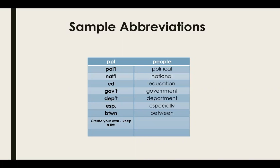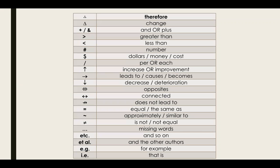3. Keep a separate list of your abbreviations and their meanings so that you can refer to them if you need to in the future. 4. If you start using a new abbreviation, add it to the list. 5. Here are some examples of abbreviations and symbols.